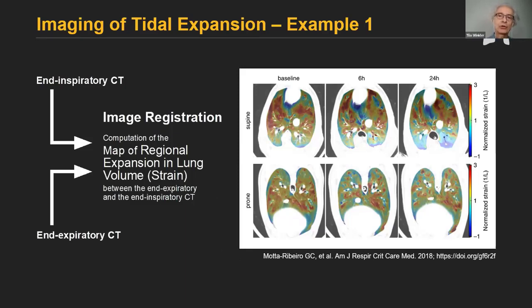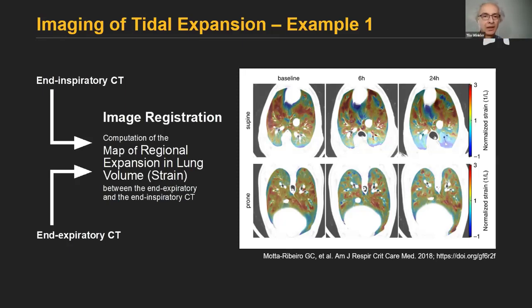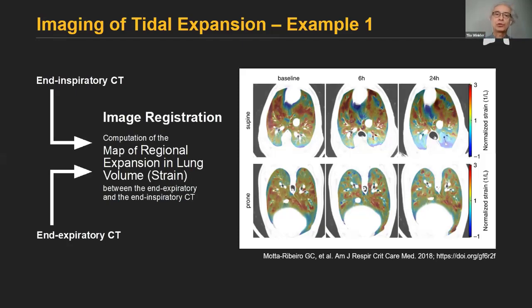This example shows that the heterogeneity in strain is much higher in supine position compared to prone, and it's increasing over time in this animal model of ventilator-induced lung injury. The strain map is the right concept for this type of analysis because it links the expansion to the magnitude of stretch that the tissue experiences, and that potentially causes lung injury.